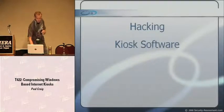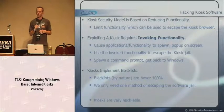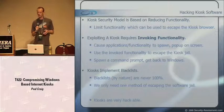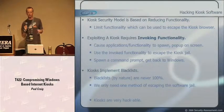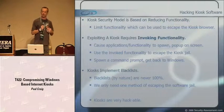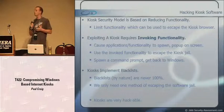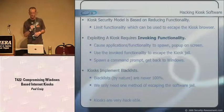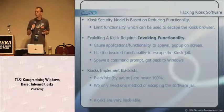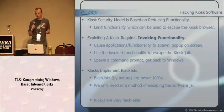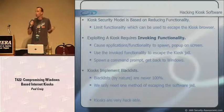The kiosk security model is based on reducing functionality - limiting what can be used to escape the kiosk browser. Exploiting a kiosk requires invoking functionality: causing applications or functionality to spawn on screen, then using that to escape the kiosk jail. We want to spawn a command prompt and get back to Windows, kill the kiosk, get rid of it. Kiosks implement blacklists, and blacklists by nature are never 100% - you can never cover every possible permutation. We only need one method of escaping; just one command shell is all we need.